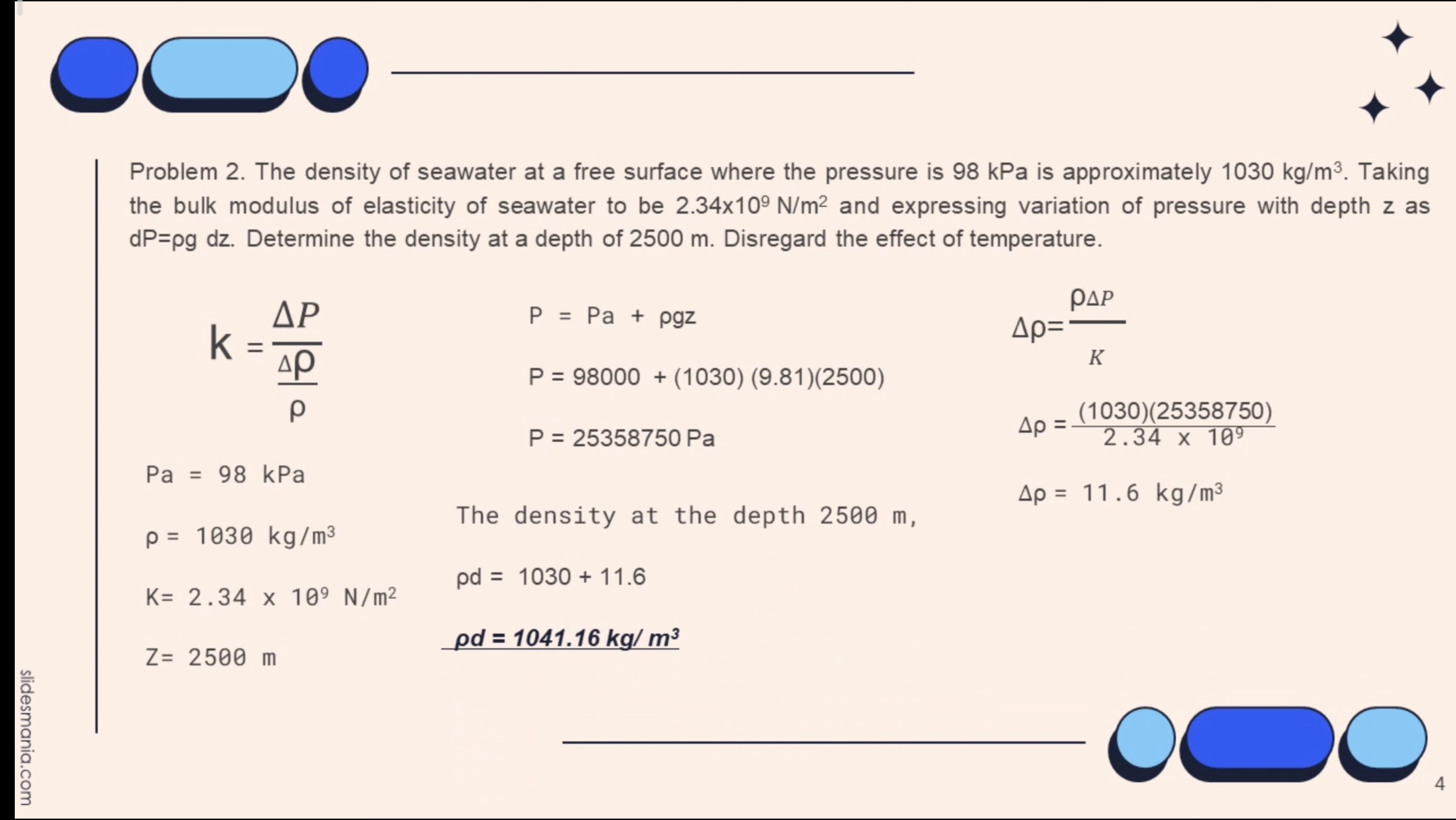Then, the density at the depth 2,500 meter equals 1,030 plus 11.6. The density at the depth 2,500 meter equals 1,041.16 kilogram over meter cube.